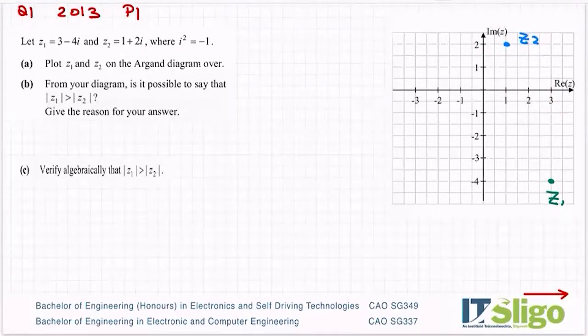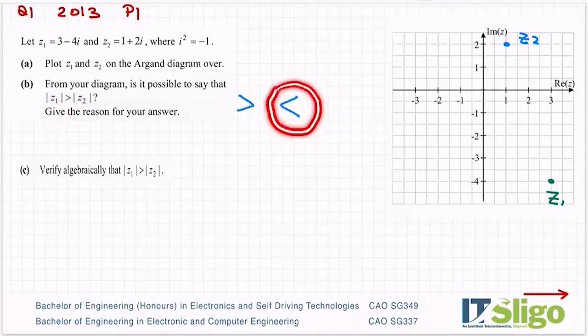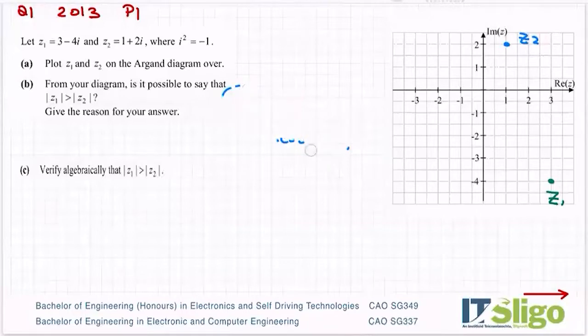From your diagram, is it possible to say that the modulus of z1 is greater than the modulus of z2? Greater than sign. If anybody's confused between these, one way of remembering them is that's like an L for less than, and it's a bit like a crooked L, which means this one must be greater than. Or you can think about it as the mouth - the mouth is open for the bigger number.